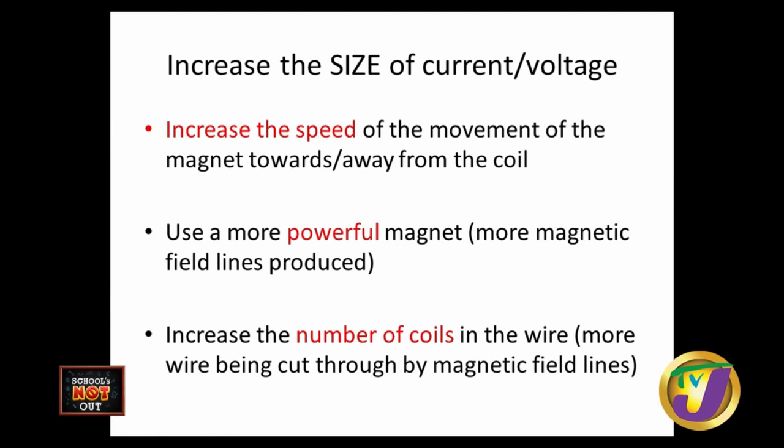How to increase the induced current? We can insert or rapidly remove the magnet — move it slowly for a small current, move it fast for a large current. Another way is to use a more powerful magnet: a larger magnet causes a greater change, giving a greater induced current. The third way is to increase the number of coils or turns in the wire. So: move the magnet faster, use a more powerful magnet, or increase the number of coils.